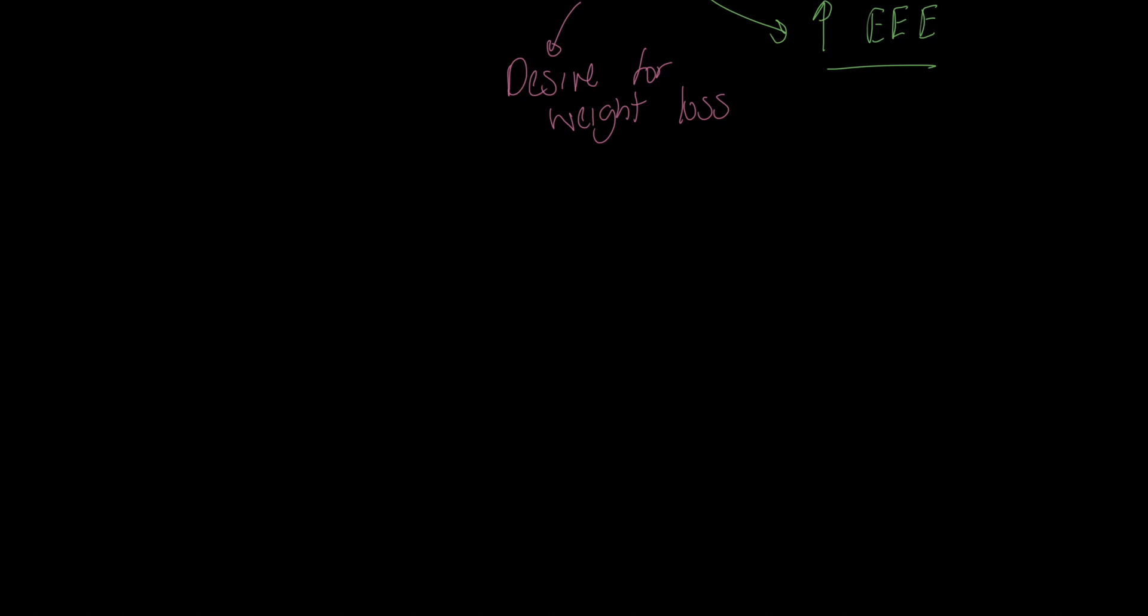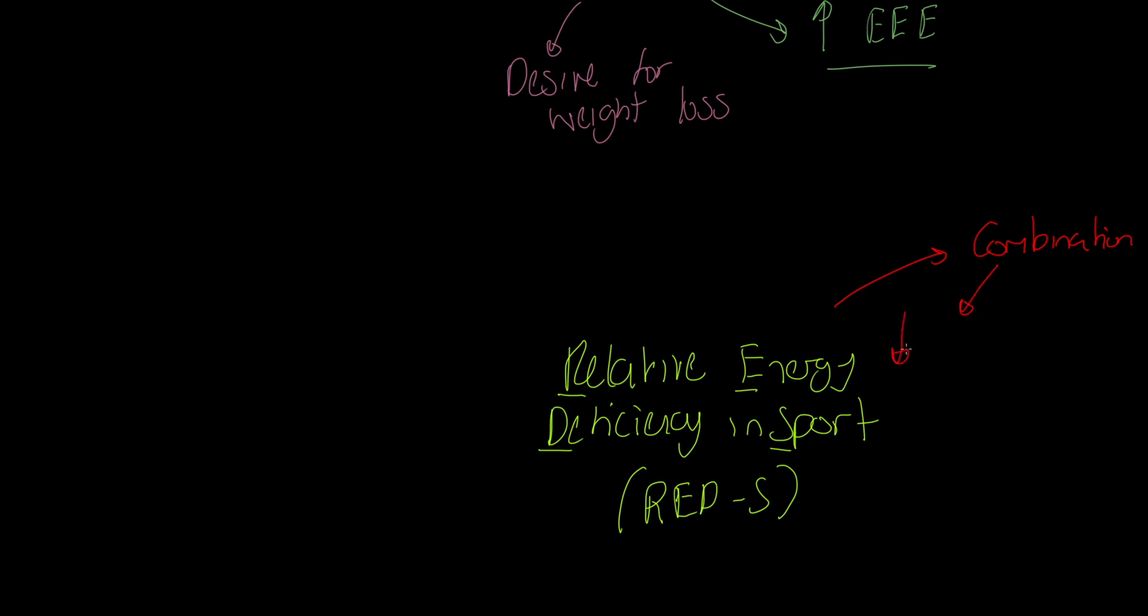All of this can cause what we call relative energy deficiency in sport. If we take our R, our E, our D, and our S, what that produces for us is a condition called REDS. And I'm going to just quickly describe what this is to you. So what we've got is we've got a combination of two things. And this is over time, by the way, so relatively chronic. We have got low EI, energy intake. We've already talked about that. We've also got high EEE in a person over time.